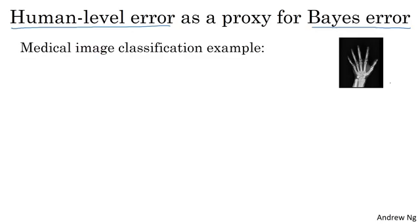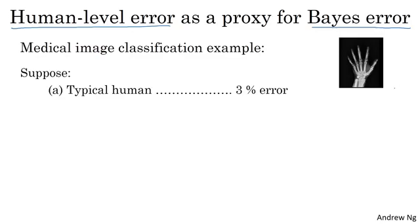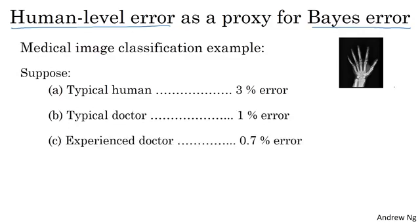Suppose you want to look at a radiology image like this and make a diagnosis classification decision. Suppose that a typical human, untrained human, achieves 3% error on this task. A typical doctor, maybe a typical radiologist doctor, achieves 1% error. An experienced doctor does even better, 0.7% error.